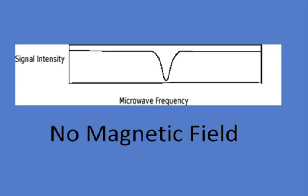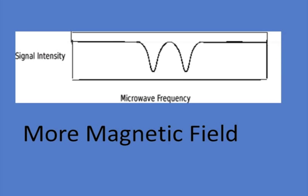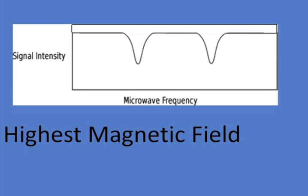If we apply a magnetic field on the NV centers, this graph changes in a predictable manner. This means that if we know the light intensity at two different microwave frequencies, we can know the magnetic field at the location.